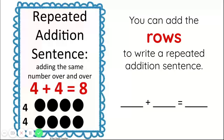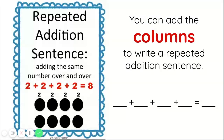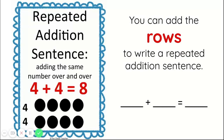You can add the rows to write a repeated addition sentence. In our first row we see 4 objects, and in our second row we also have 4 objects, so our repeated addition sentence would be 4 plus 4 equals 8. You can also write a repeated addition sentence with your columns — the columns go up and down. You count the objects in the columns and add that number as many times as there are columns. In this array there are 4 columns and every column has 2 objects, so we add 2 four times: 2 plus 2 plus 2 plus 2 equals 8. Whether using columns or rows, the answer is always 8.